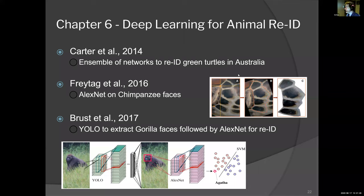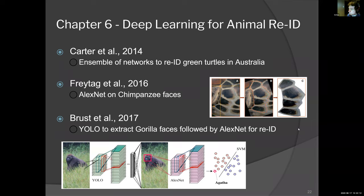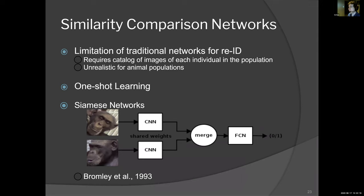Re-ID from that history diagram has been tackled before for animal individuals. Carter et al. had the first paper using feed-forward neural networks to look at the shell pattern of green turtles off the coast of Australia. Freytag et al. in 2016 used AlexNet for chimpanzee faces, and Brust et al. used YOLO to crop out the face from an image and pass it through a neural network. The problem with these previous techniques is that they're only relevant when you have a catalog of a large number of images for every animal in your population — neural networks operate by having a multiple-choice test at the end. For any realistic ecological purpose outside a national park where you know every individual, this is totally unrealistic. You don't have a catalog of every individual, and you're unable to obtain that.